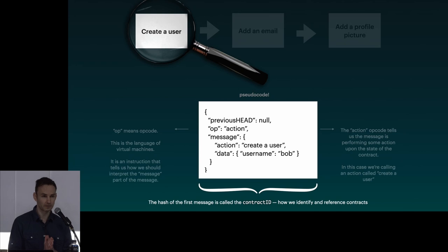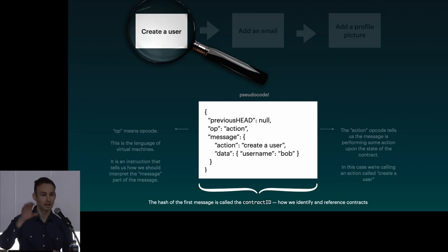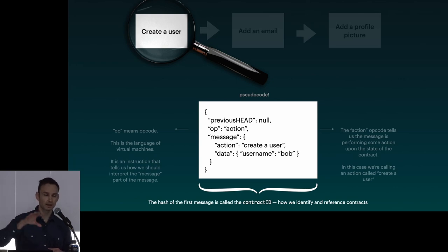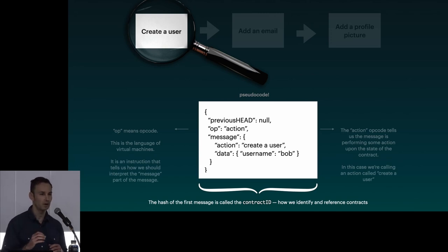In the first event, the hash of that first event we're going to call the contract ID — this is how we reference these contracts. This list of events that we're building we're going to call a contract chain. The reason we call it a 'contract' — that word comes from smart contracts.